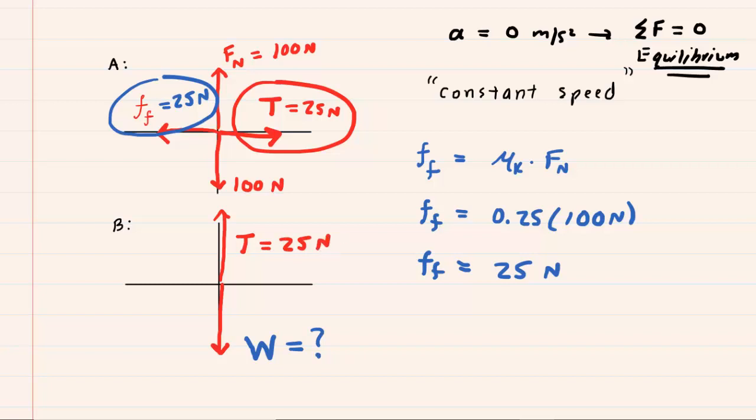And then continuing this logical progression of ideas, remember block B is in equilibrium as well, so if there's an upward force of 25 newtons, there must be a downward force also equal to 25 newtons in order to cancel out the upward force. So the weight of that hanging block must also be 25 newtons to keep block B in equilibrium.